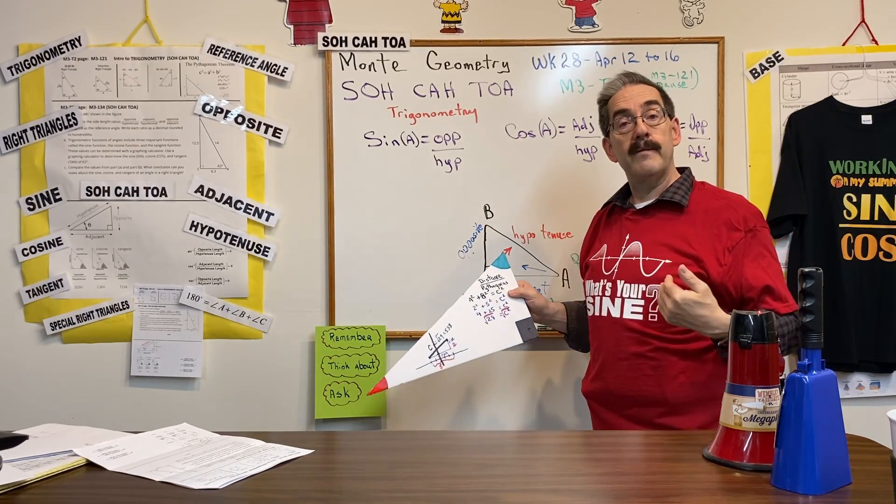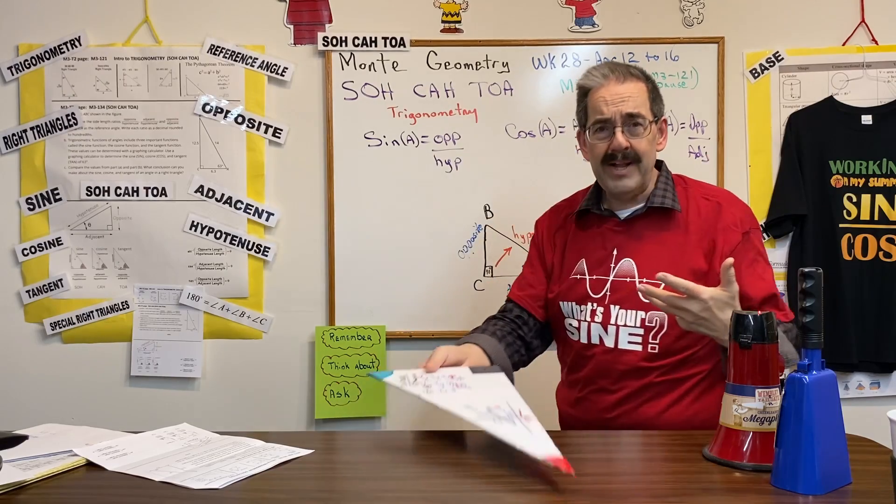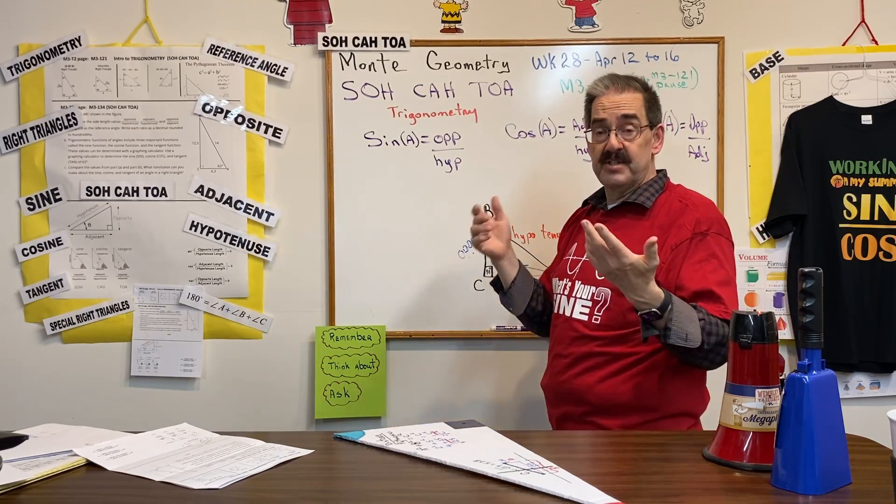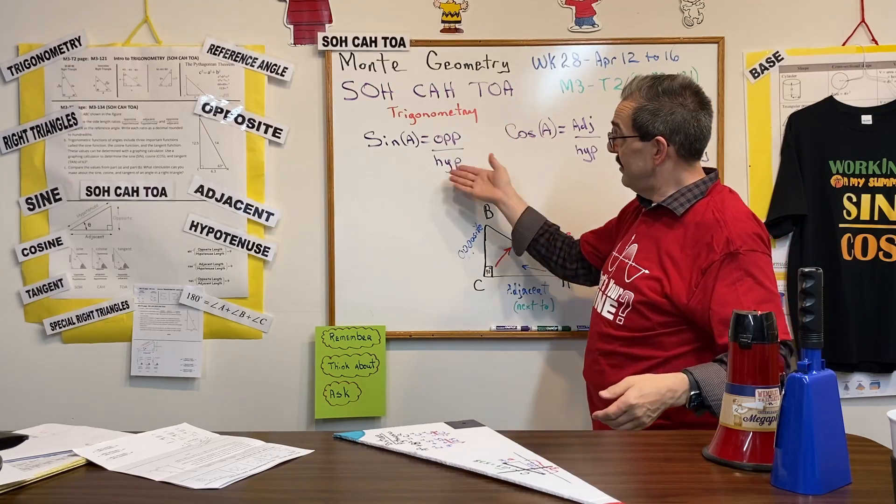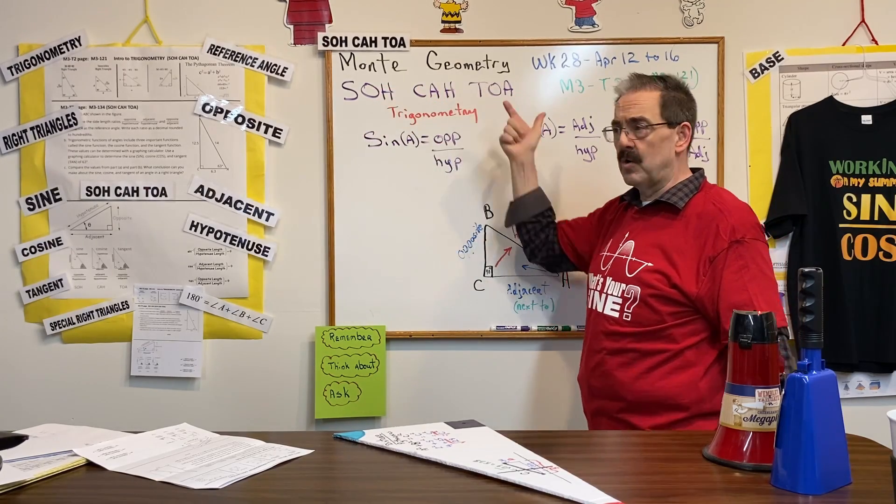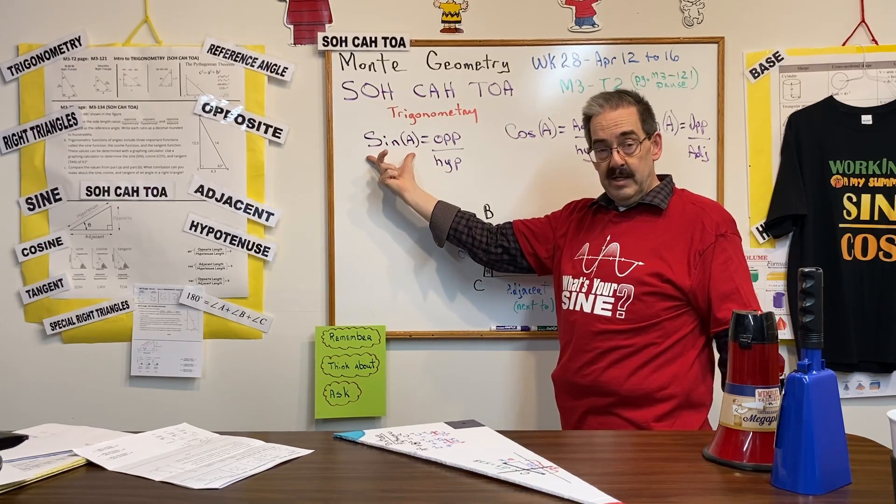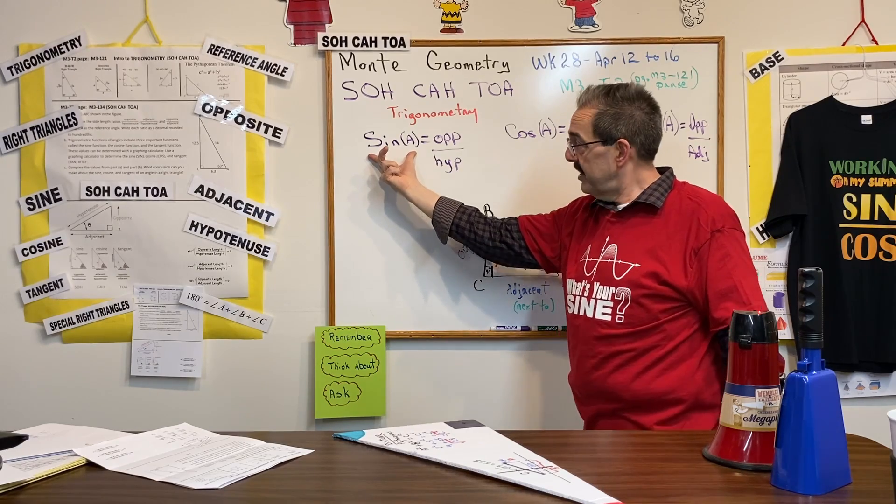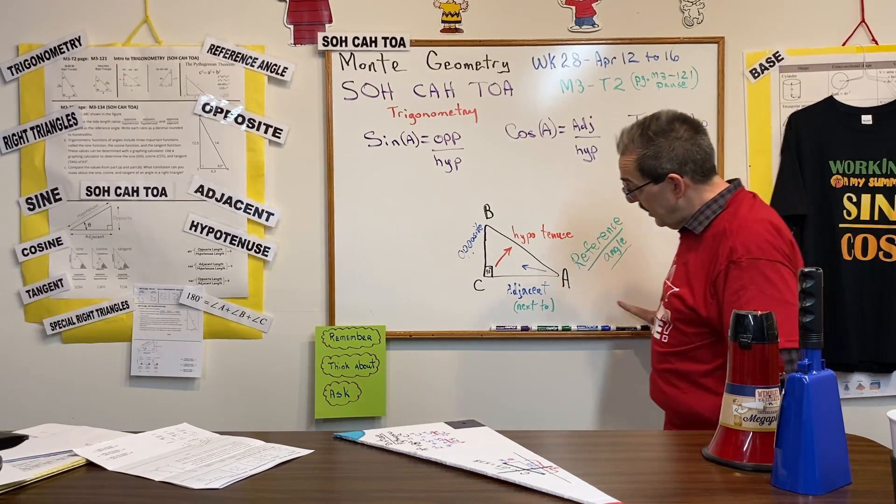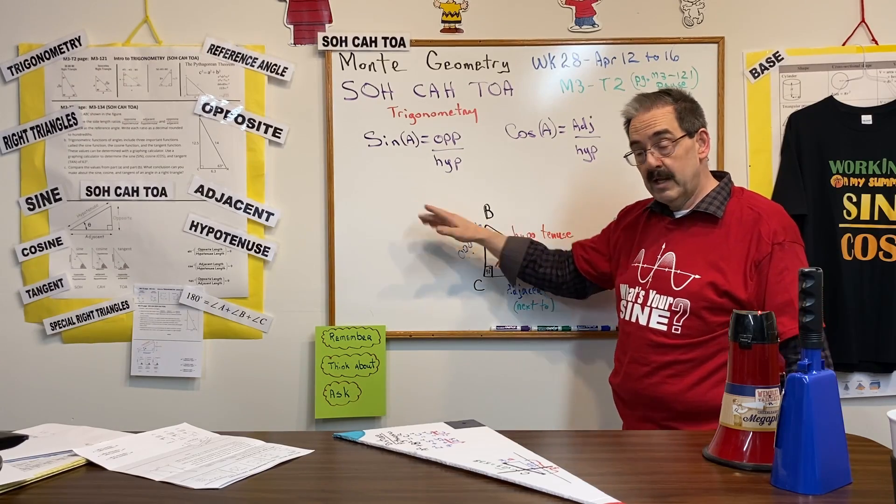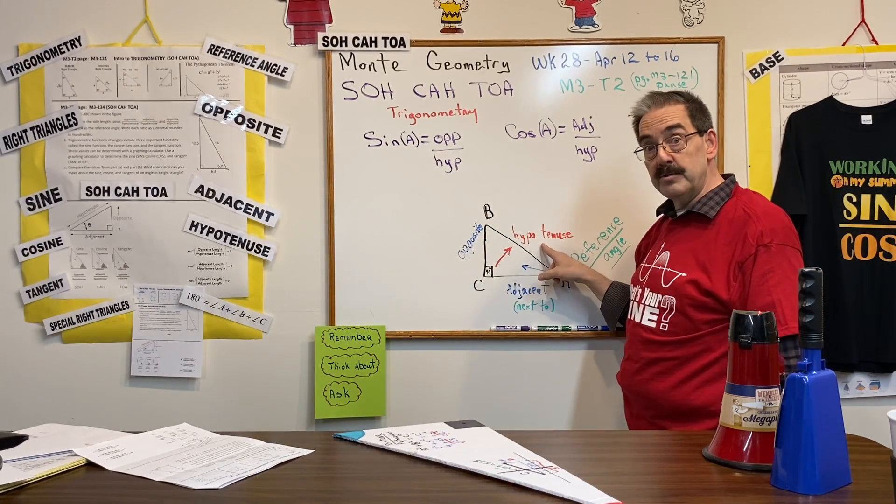All right, and step one in learning about that dance was special right triangles. Step two will be this thing called SOH CAH TOA. The sine of an angle, this relationship based on the reference angle, is the opposite side divided by the hypotenuse.